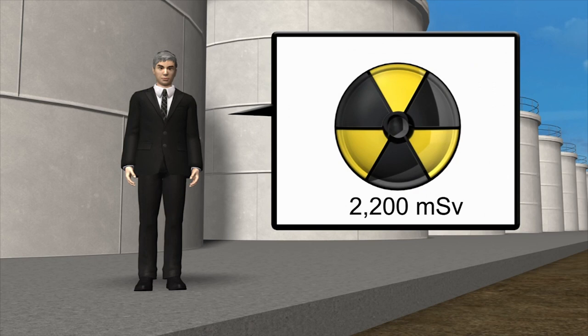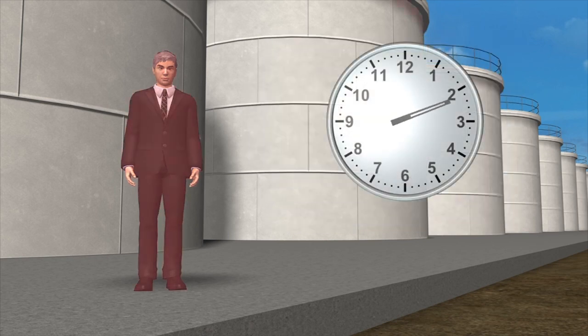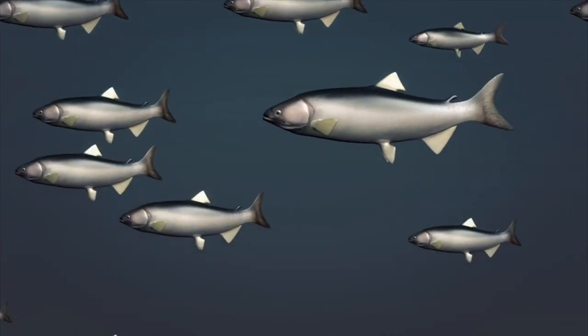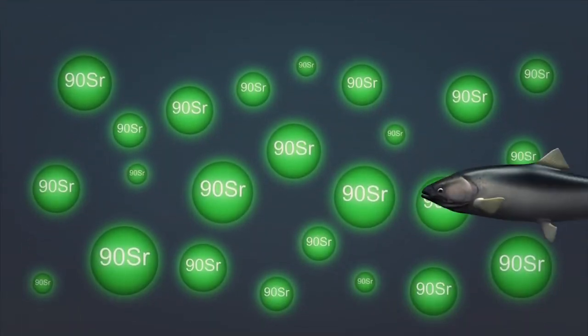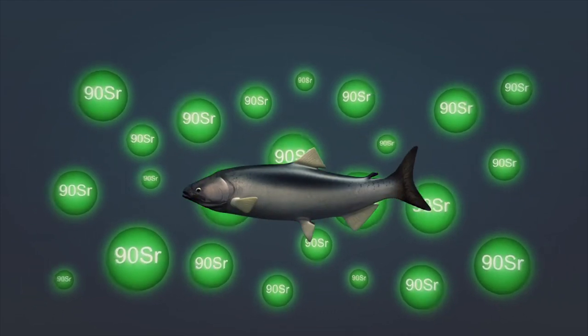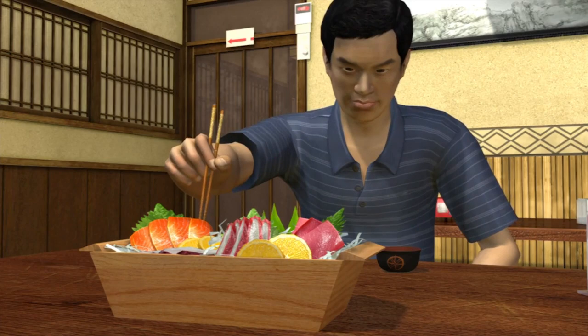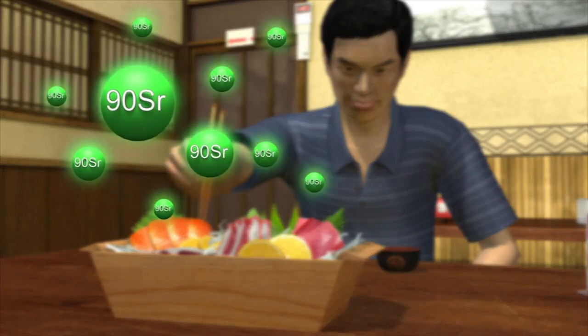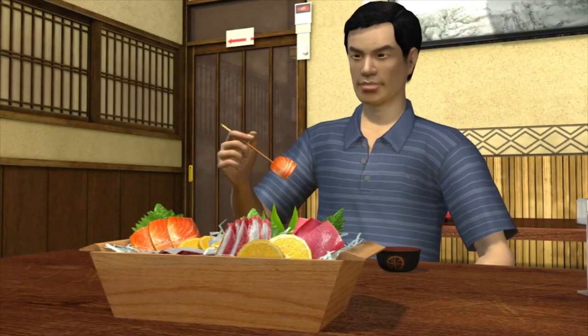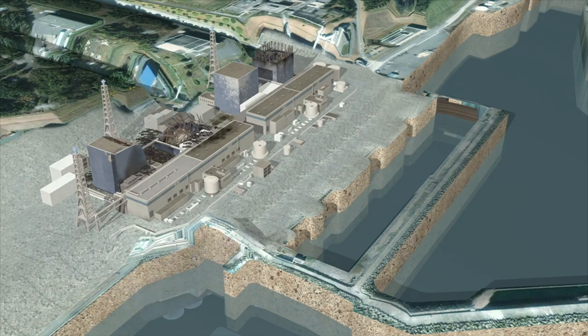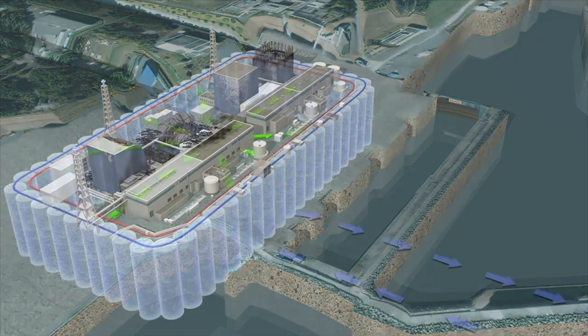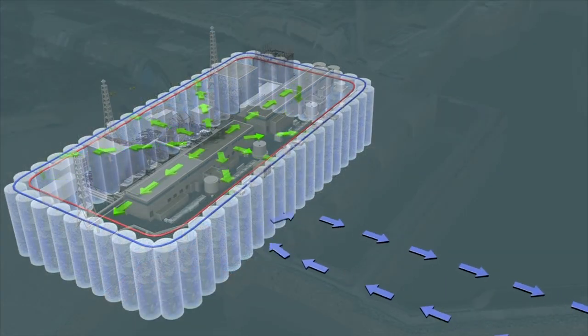The NRA has detected radiation near some tanks at levels of 2,200 millisieverts, the highest level recorded so far. This level would kill an unprotected person within hours. Experts estimate 300 tons of contaminated water leaks into the ocean daily and have recently detected heightened levels of strontium-90. Strontium accumulates in fish bones and is passed on to humans when eaten.